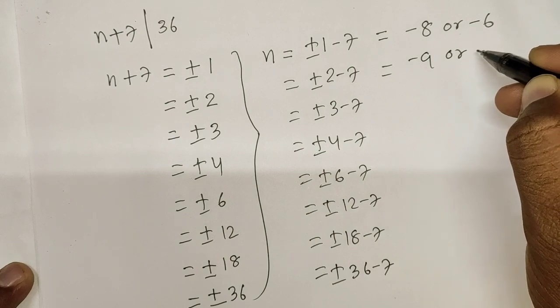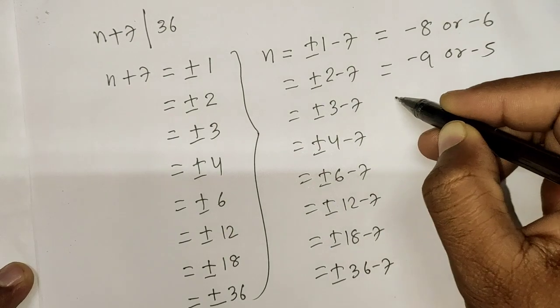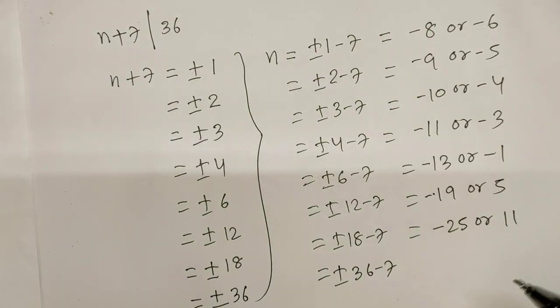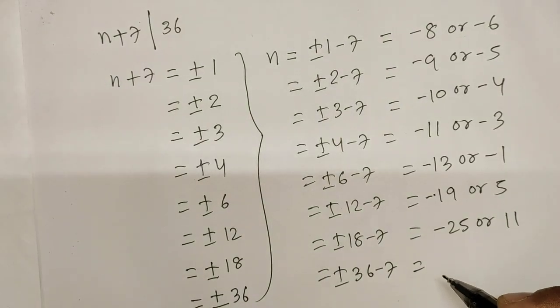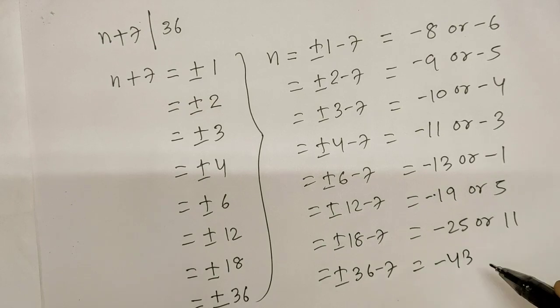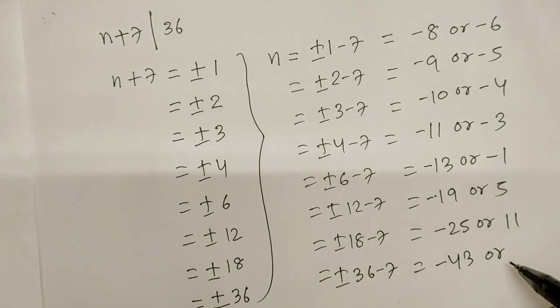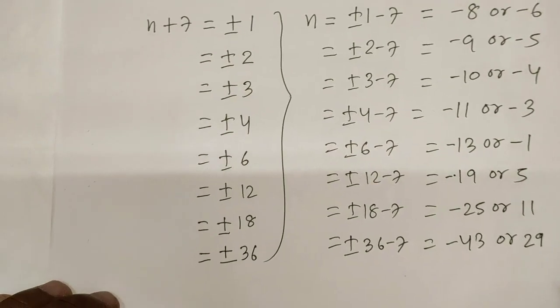+4-7=-3, -4-7=-11, +6-7=-1, -6-7=-13, +12-7=5, -12-7=-19, +18-7=11, -18-7=-25, +36-7=29, -36-7=-43.